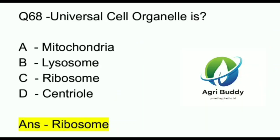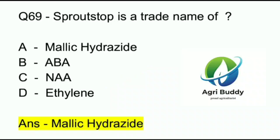Question 68. Universal cell organelle is? A. Mitochondria. B. Lysosome. C. Ribosome. D. Centriole. And the answer is Ribosome.